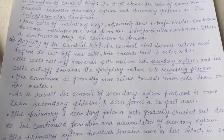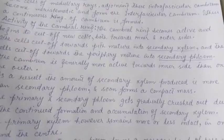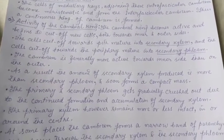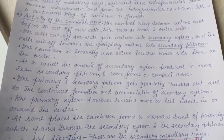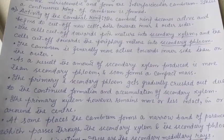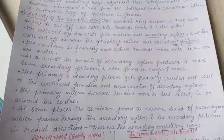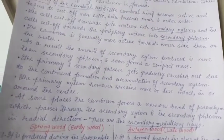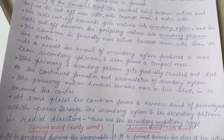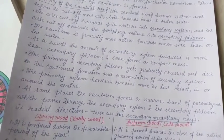The growth on the inner side of the ring is more active than on the outer side where the phloem lies, so secondary xylem soon forms a compact mass. The primary and secondary phloem gets gradually crushed due to continued formation and accumulation of secondary xylem. The primary xylem however remains more or less intact in or around the center. At some places the cambium forms narrow bands of parenchyma passing through the secondary xylem and secondary phloem in radial directions — these are the secondary medullary rays.